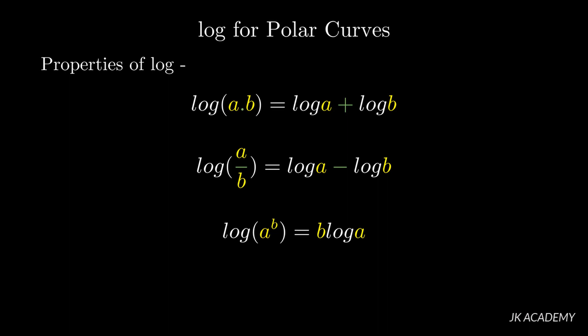Looking at these three properties — in the first property, in the LHS we have log of a times b; if there is a multiplication between two variables, that becomes log a plus log b in the RHS, so multiplication becomes addition between two logarithms. If there is a division in the LHS, log(a/b) becomes log a minus log b.